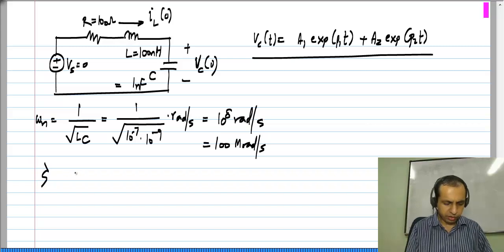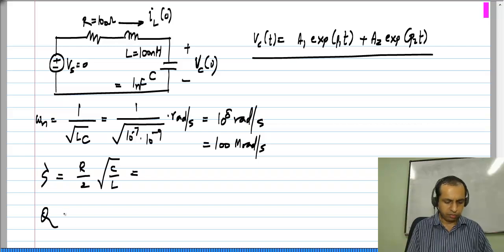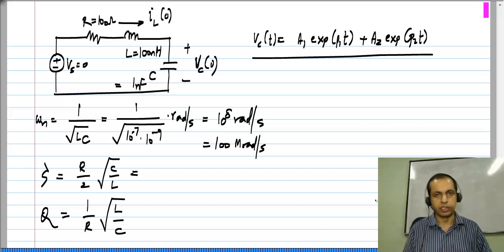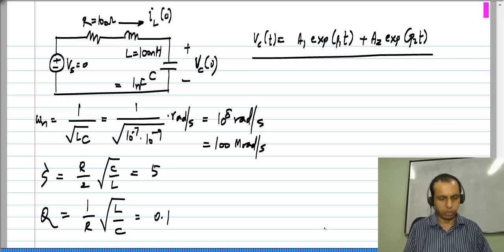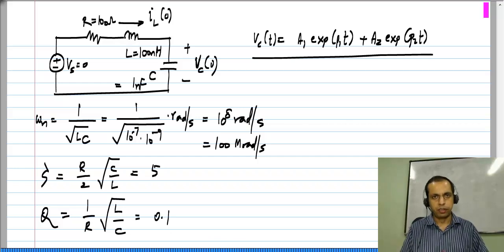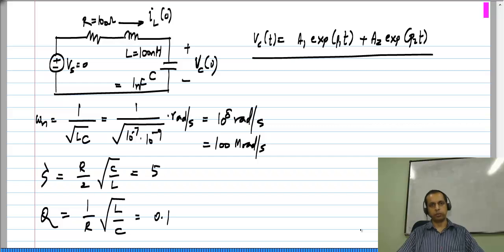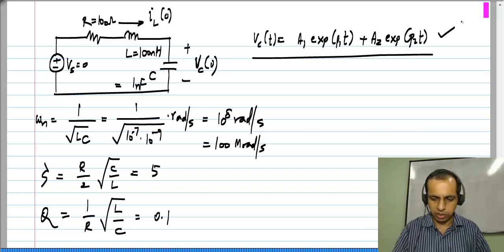Now the damping factor zeta, which is R by 2 square root of C by L, can be calculated. Alternatively, you can calculate Q which is 1 over R square root of L by C. If you do it for this particular case, you will find that zeta is 5 and Q is 0.1. Clearly this is an overdamped system, that is zeta is more than 1, which means the roots of the characteristic equation will be real and distinct, and the natural response will be in this form.